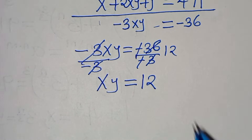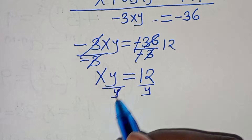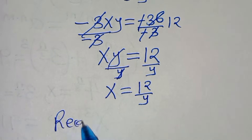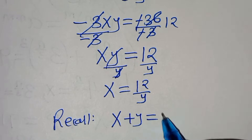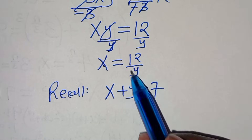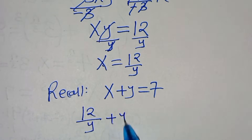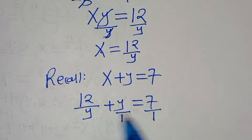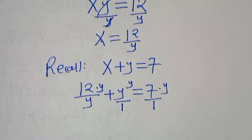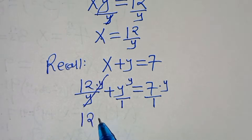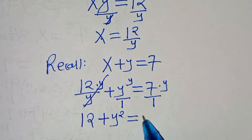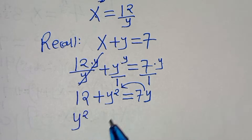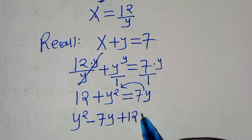We make x the subject: x = 12/y. Substituting into x + y = 7 gives 12/y + y = 7. Multiplying through by y: 12 + y² = 7y, which rearranges to y² − 7y + 12 = 0.